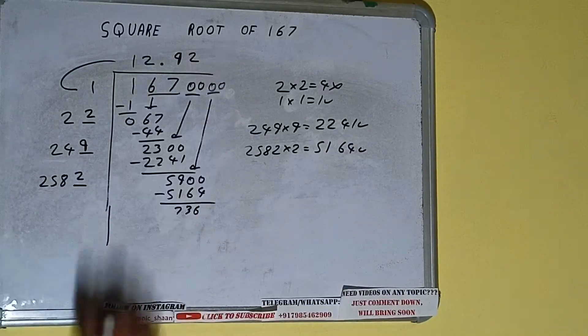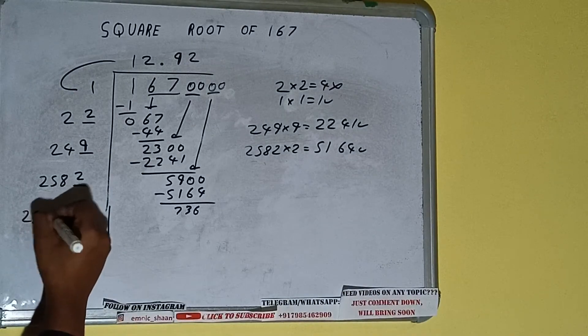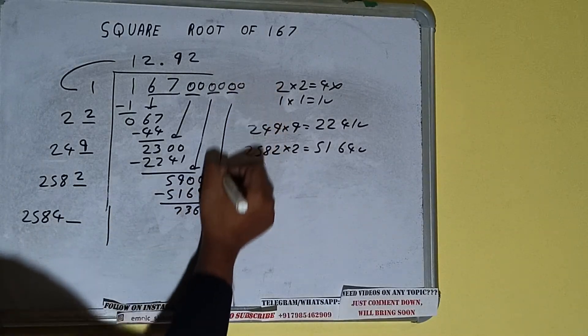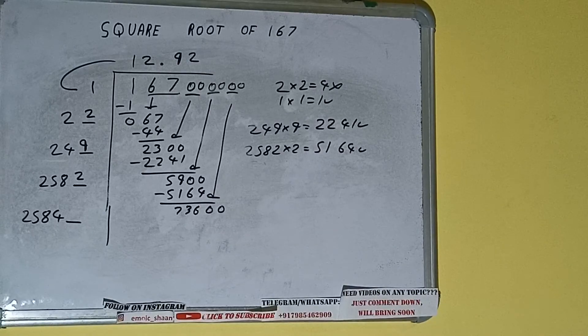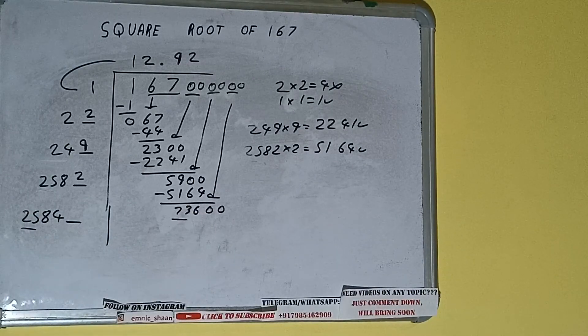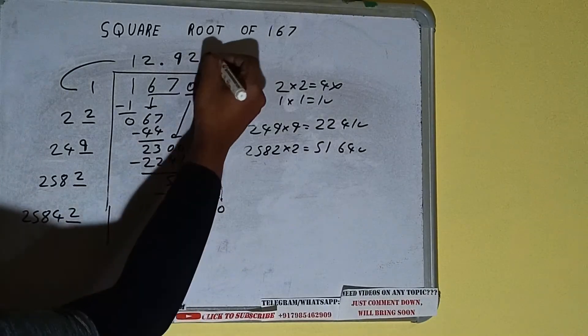Now 2582 into 2 we did so add both. So 2582 plus 2 will be 2584 and one digit extra. And this number we need to make it big. So bring the next pair of zeros down and it will be 73600. Compare this 25 with this 73. So we can try 2 times. So 2 here and 2 here.